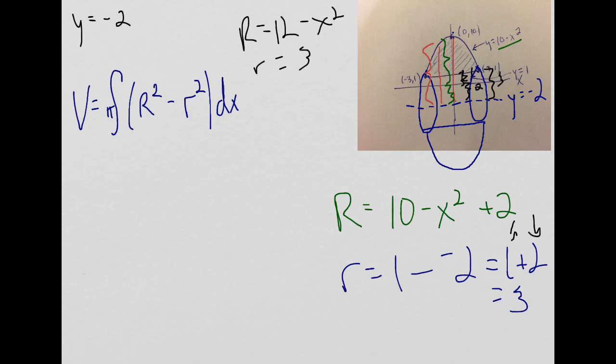Now all I have to do is sub them into these two spots right here, and then I'm done. So my volume is pi integral. I'm going to bracket it. 12 minus x squared, close, minus 3 squared is 9, close, bracket, dx.